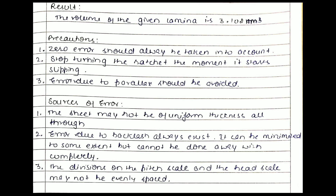Sources of error are also important. The sheet may not be of uniform thickness — this is a common source of error, so you must try to take a sheet that is uniformly thick. Error due to backlash always exists; it can be minimized but cannot be completely eliminated. The divisions of the pitch scale may not be evenly spread, so take a correct screw gauge to get accurate readings.